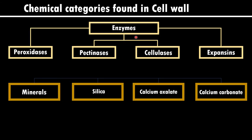When it comes to enzymes, we can see different kinds of enzymes helpful especially in the degradation of different substances. Peroxidases, pectinases, cellulases, and expansins are the enzymes observed in the cell wall. Apart from that, we can also observe minerals which are silica, calcium oxalate, and calcium carbonate. That is why whenever we touch grasses or pteridophytes like Equisetum, we can experience the presence of these hard materials.